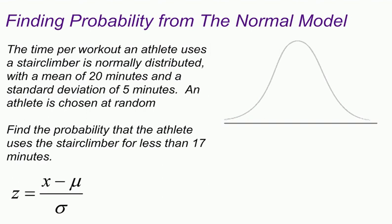Let's take a look at our example. The time per workout an athlete uses a stair climber is normally distributed with a mean of 20 minutes and a standard deviation of 5 minutes. An athlete is chosen at random. Find the probability that the athlete uses the stair climber for less than 17 minutes.